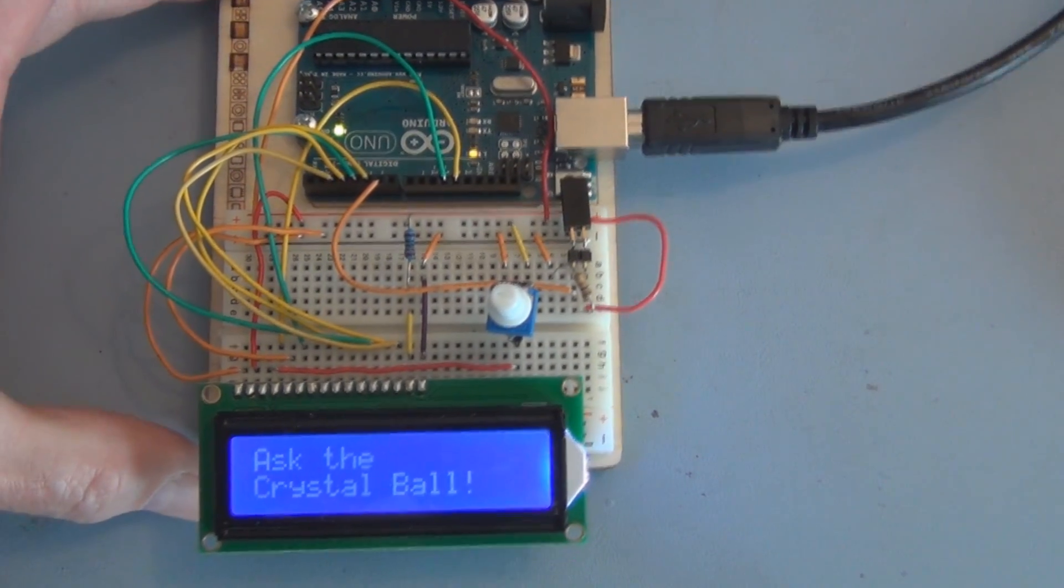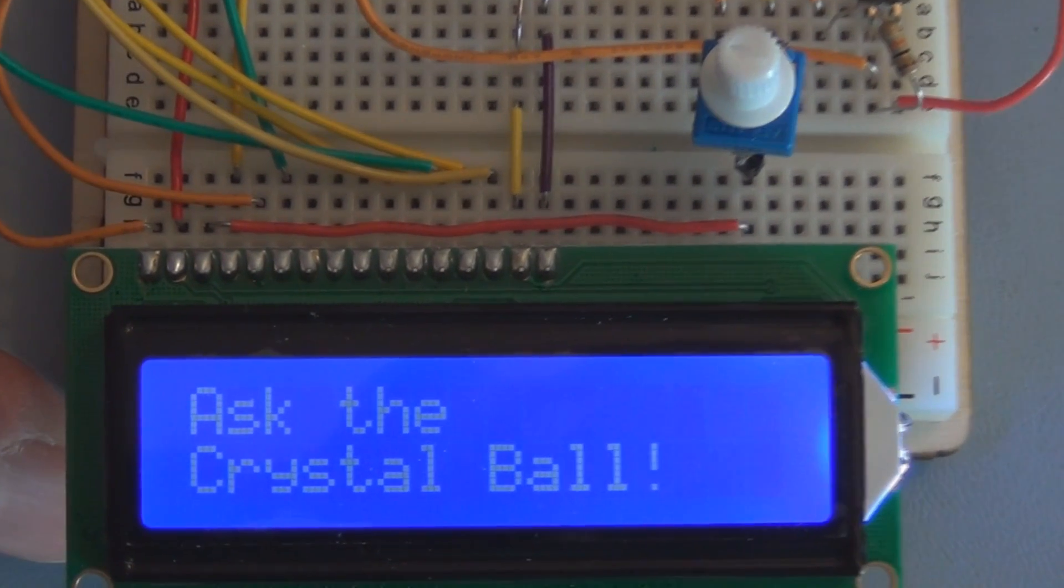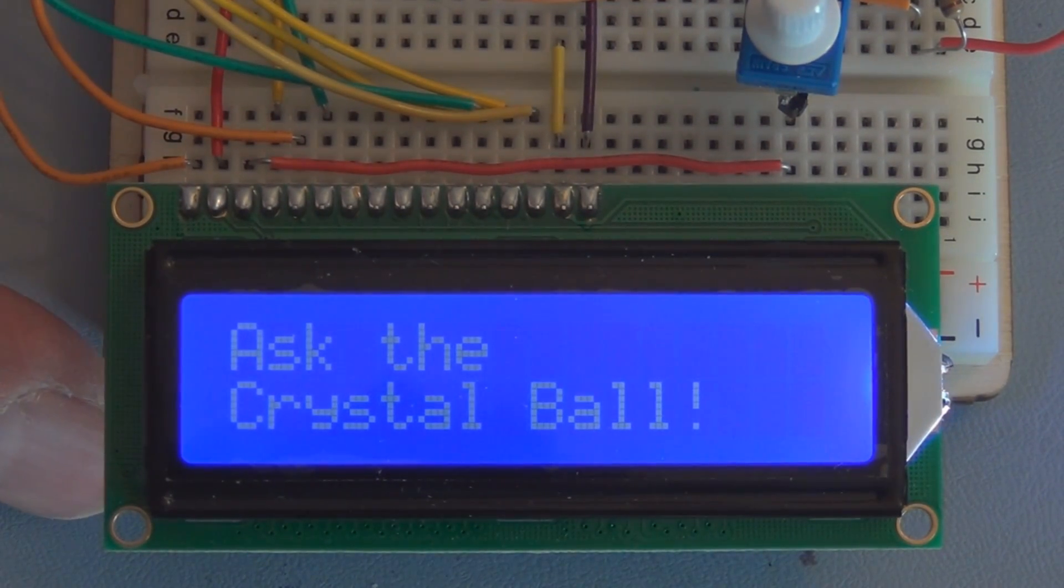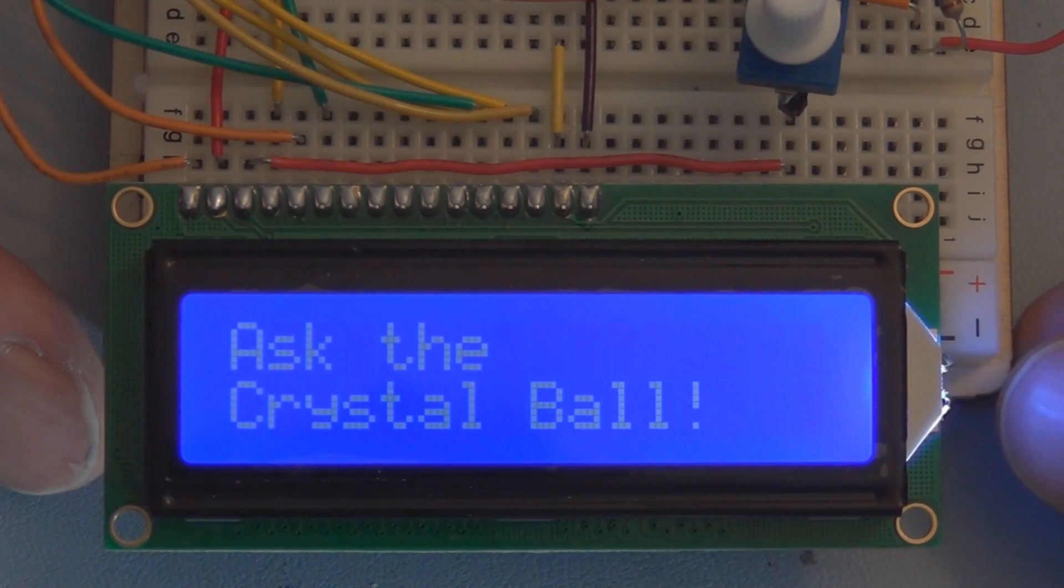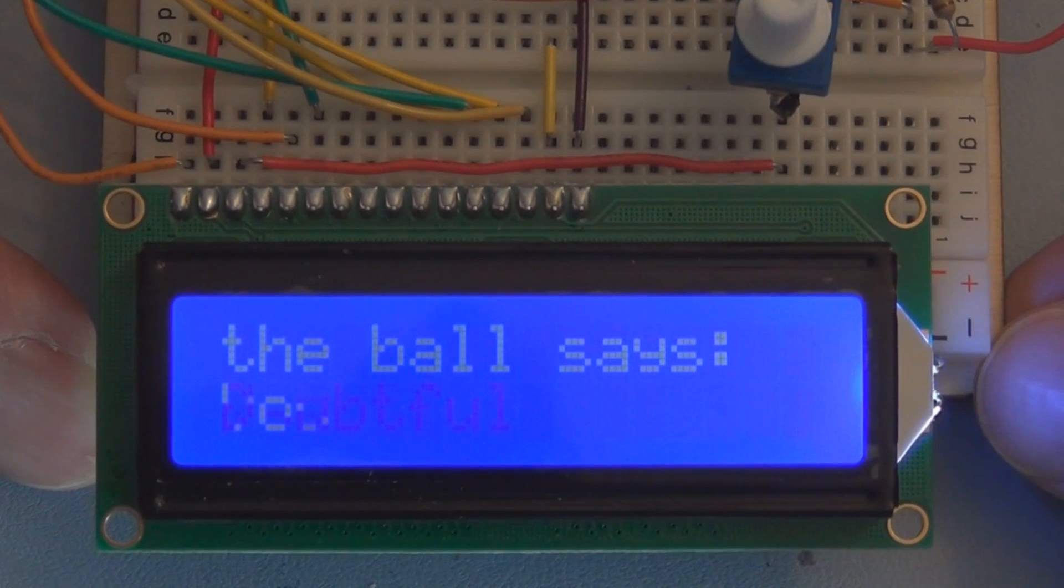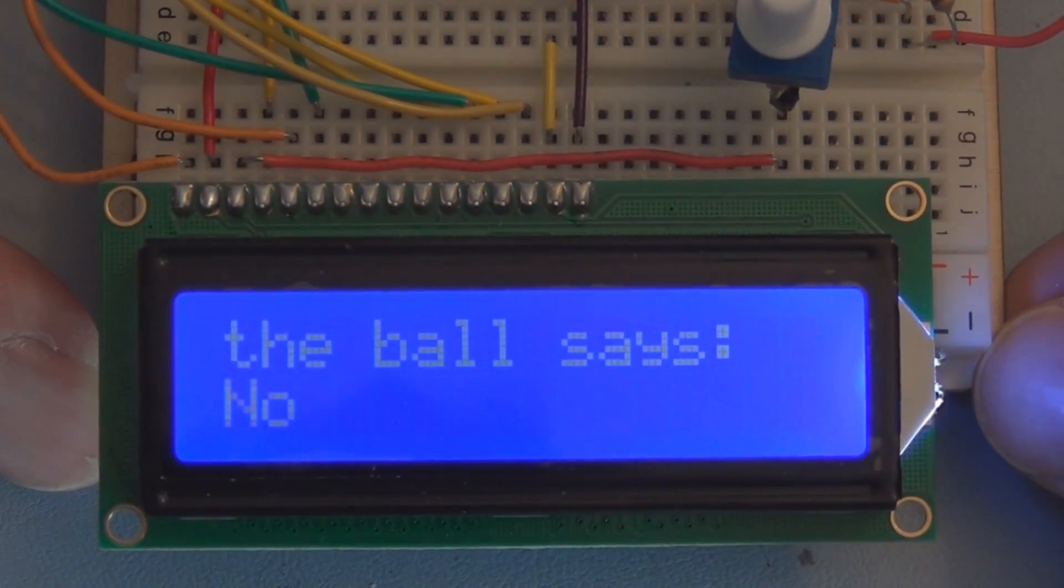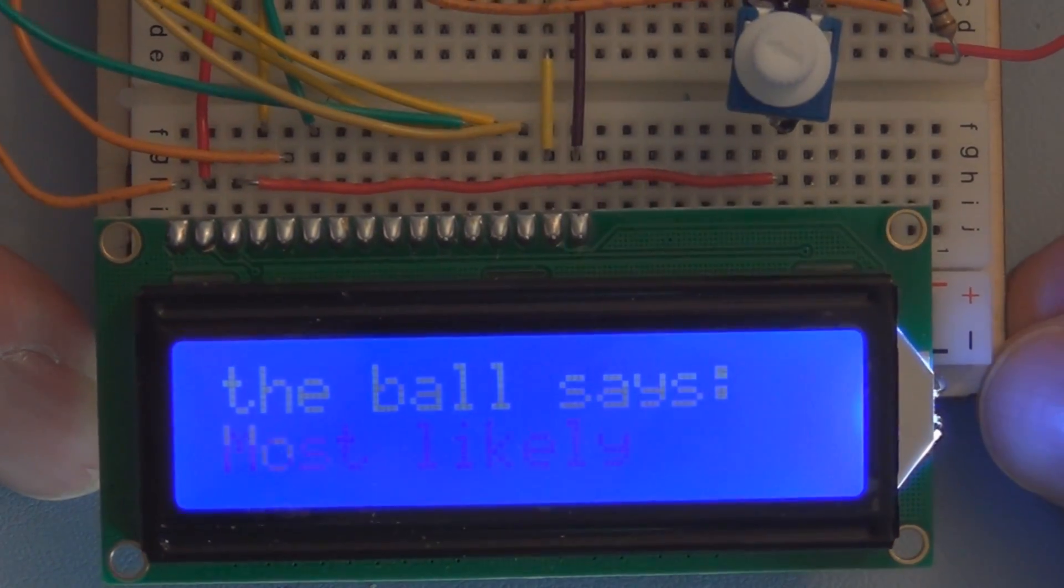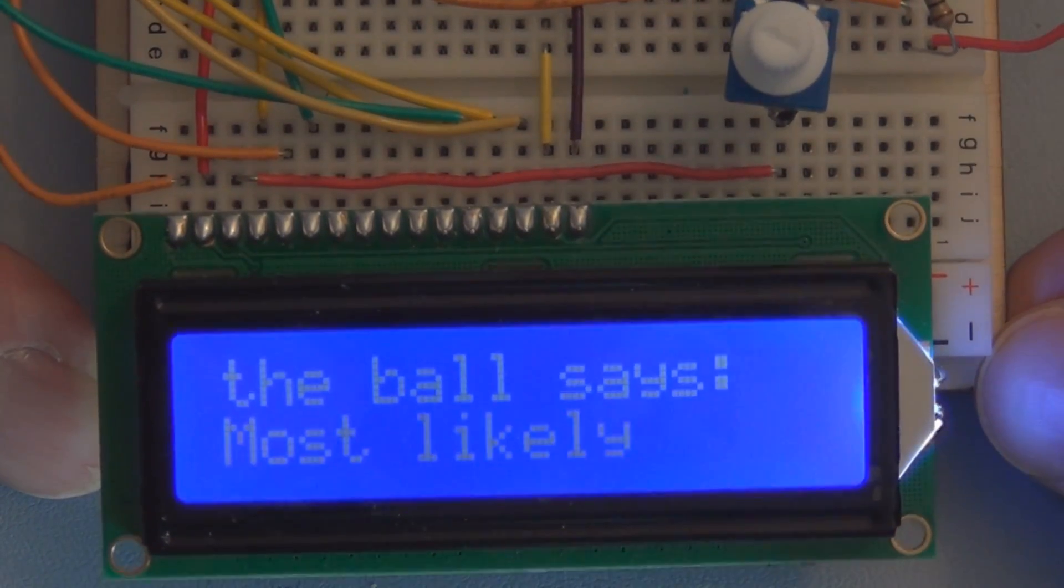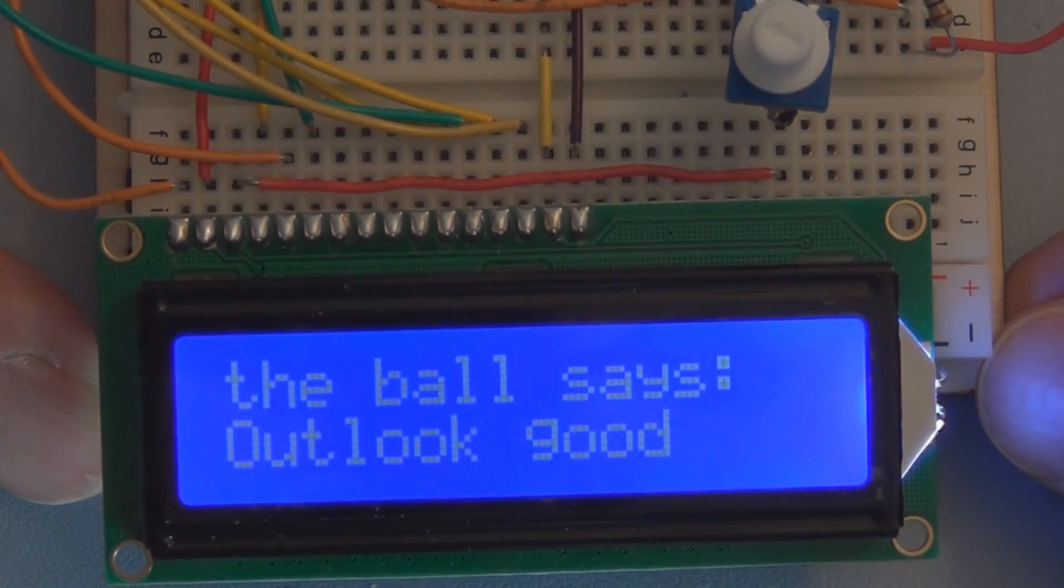Upload the sketch. So you can see the initial screen here. It says ask the crystal ball. That's the initial message. So if you tilt this circuit, or tilt the tilt switch there, it comes up with random responses to whatever questions you might be posing to the magic ball.